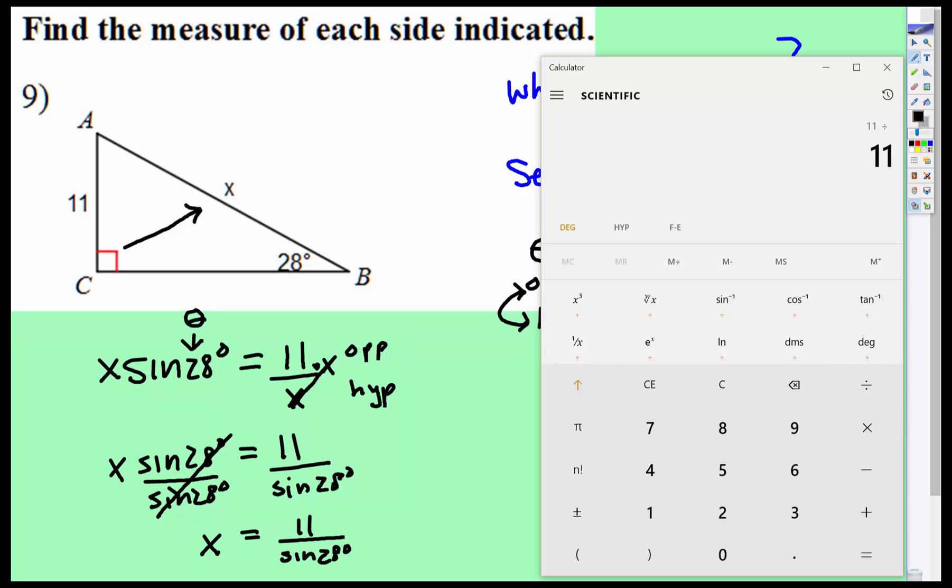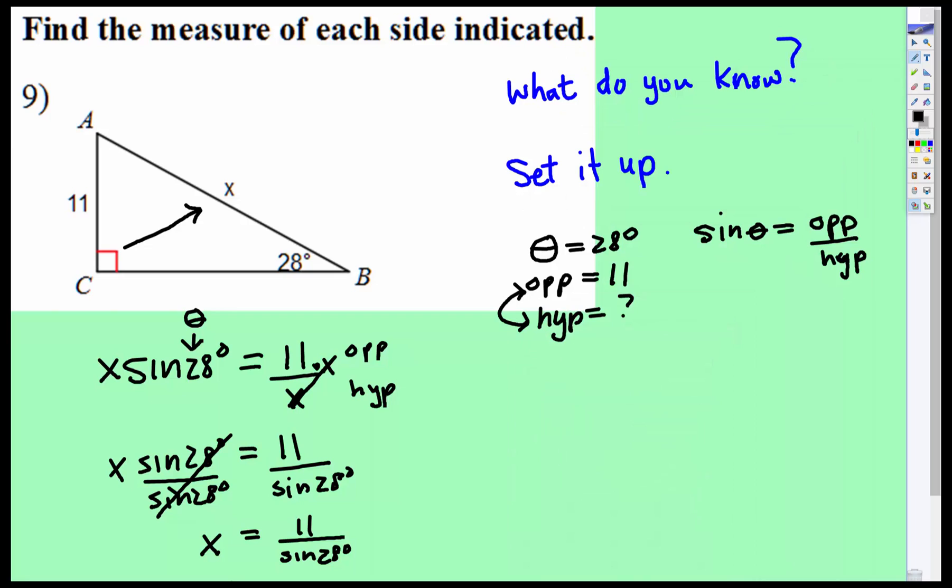11 divide, and now I have to hit - here I'm going to use parentheses - 28 sine, right parentheses, equals. Now I'm going to round to the nearest tenth, and I believe that says that x will equal 23.4. Let's go ahead and try it another way.